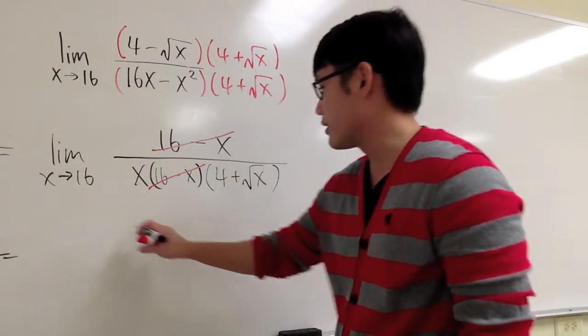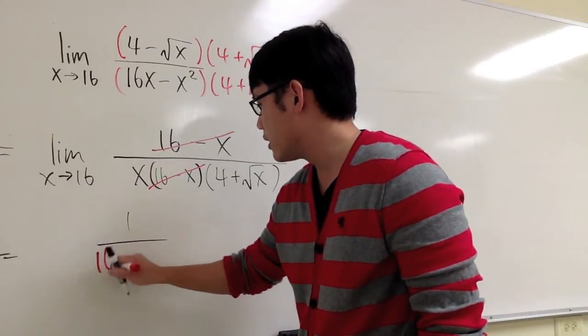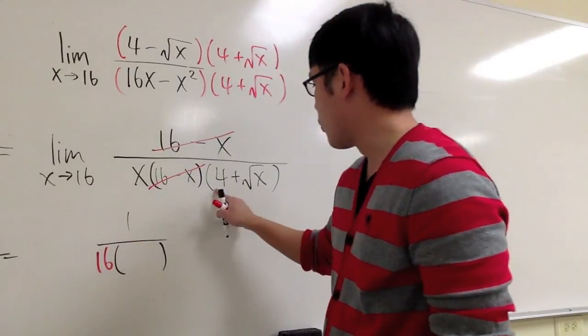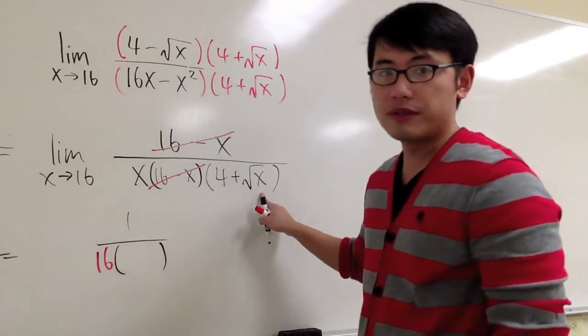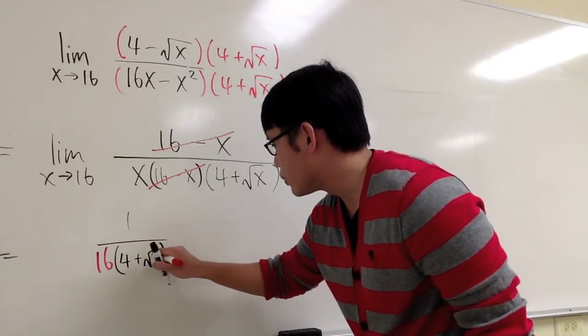We have the 1 left on top over, this becomes 16, and then we multiply with 4 plus square root of 16. And let's see what we get for that.